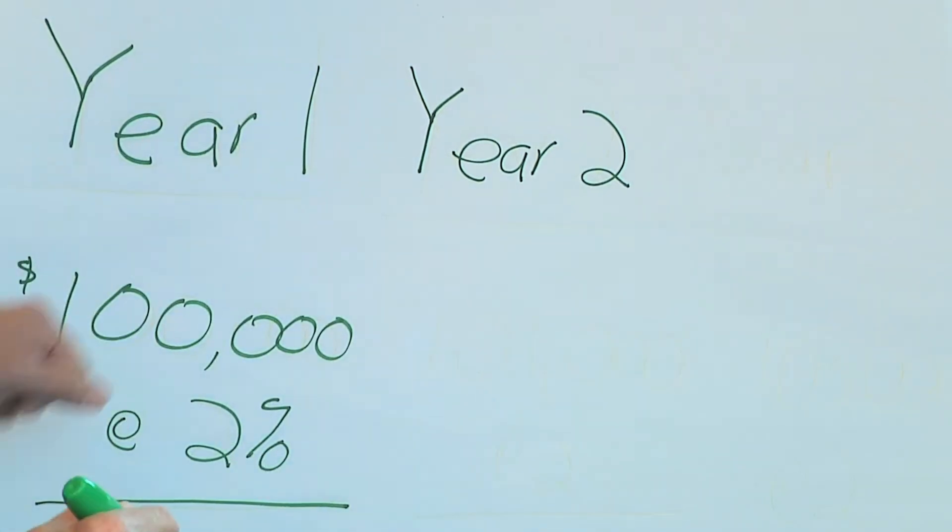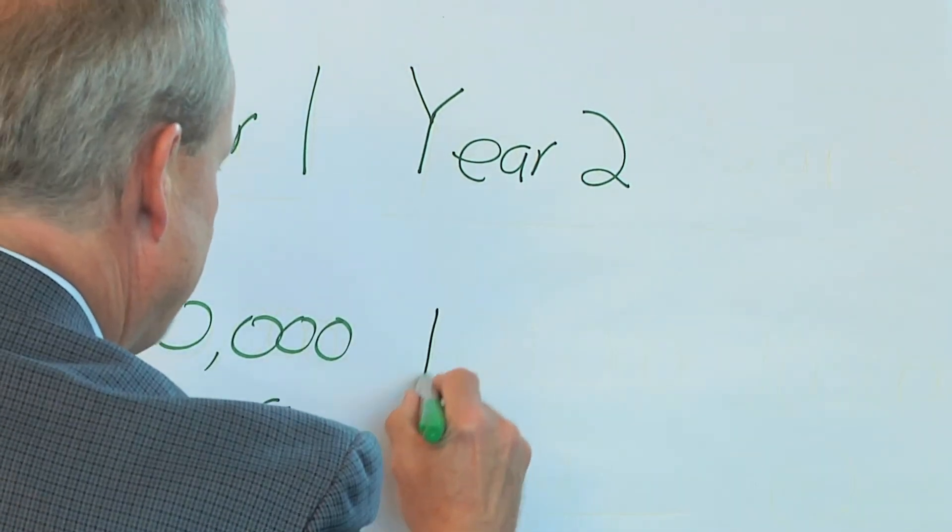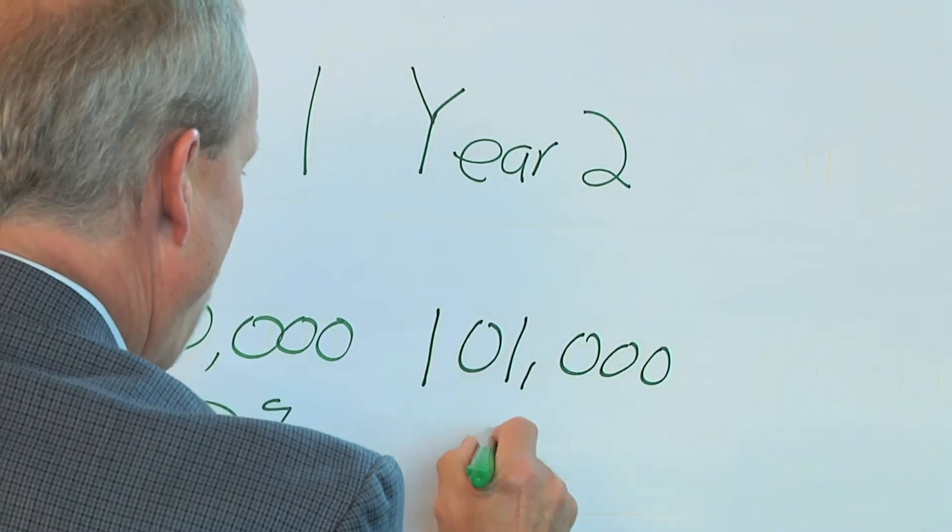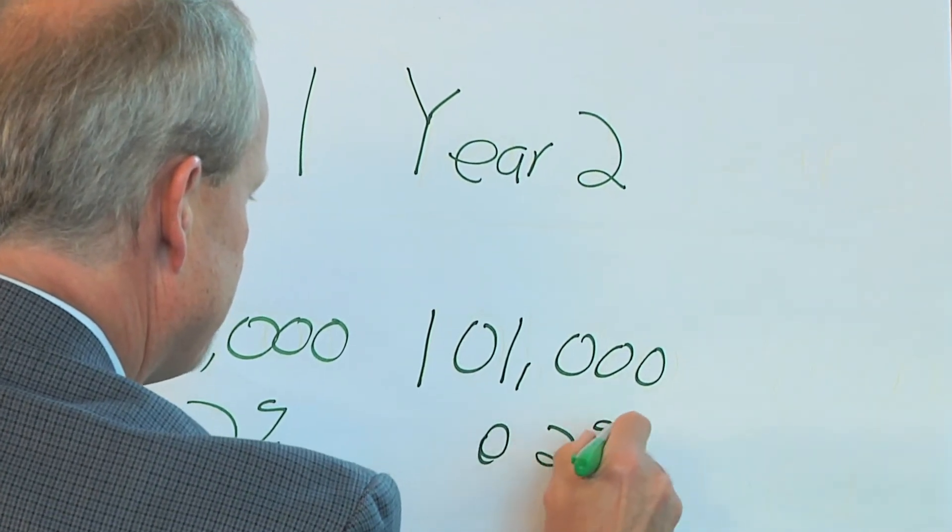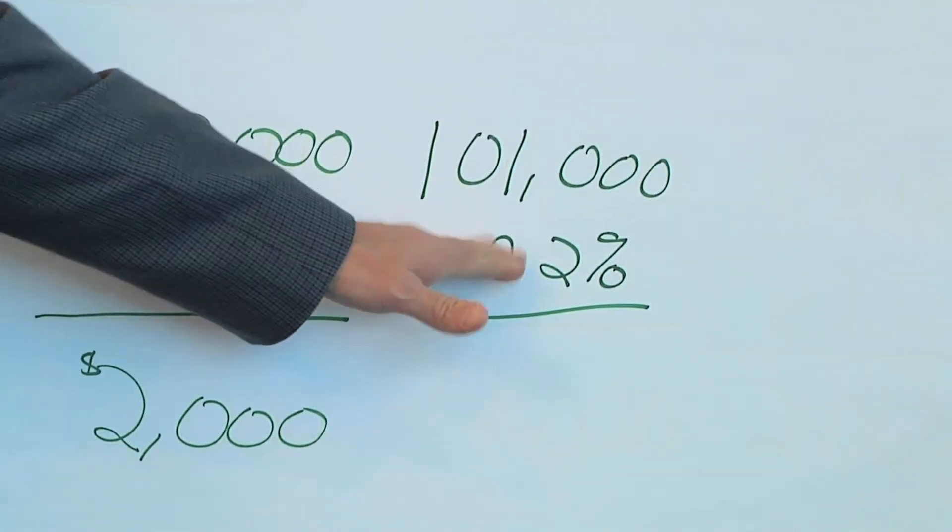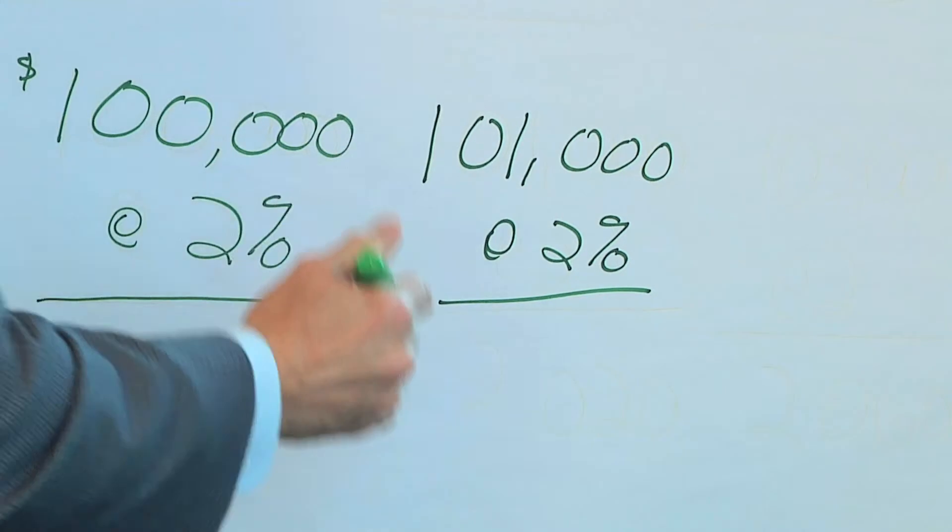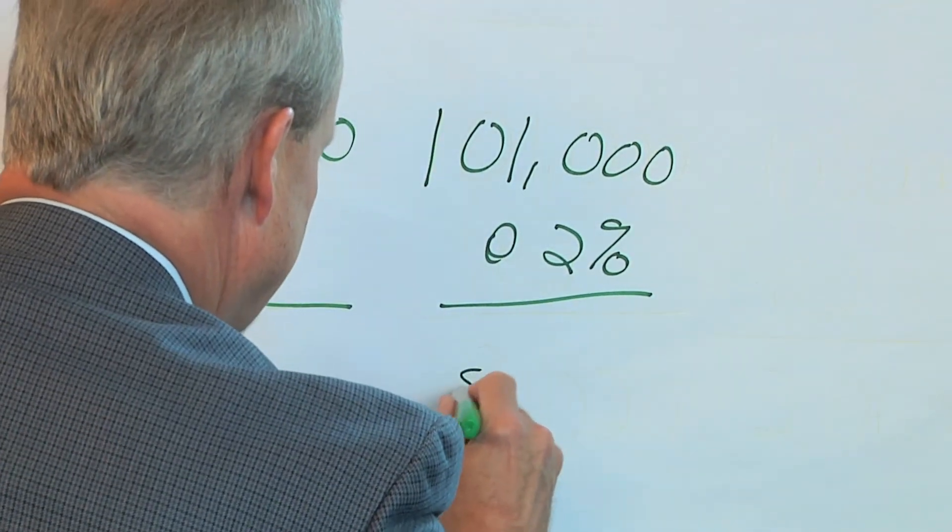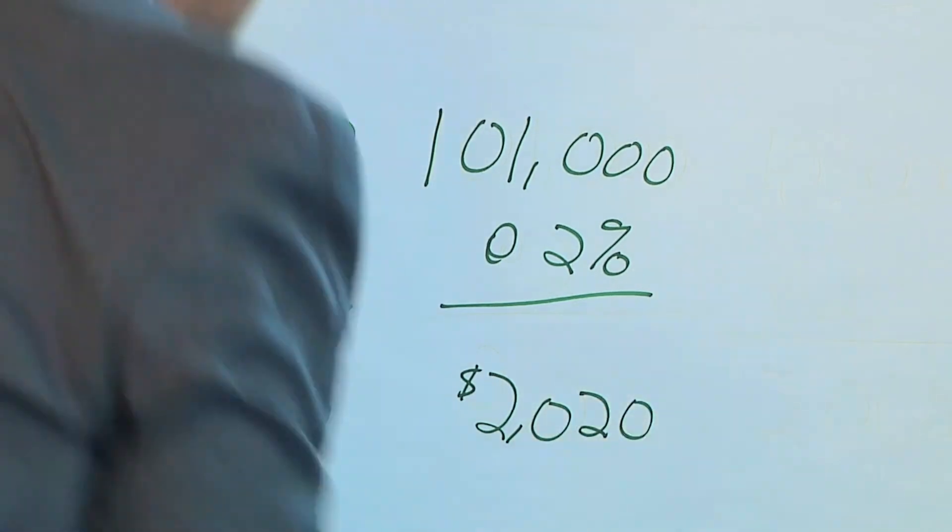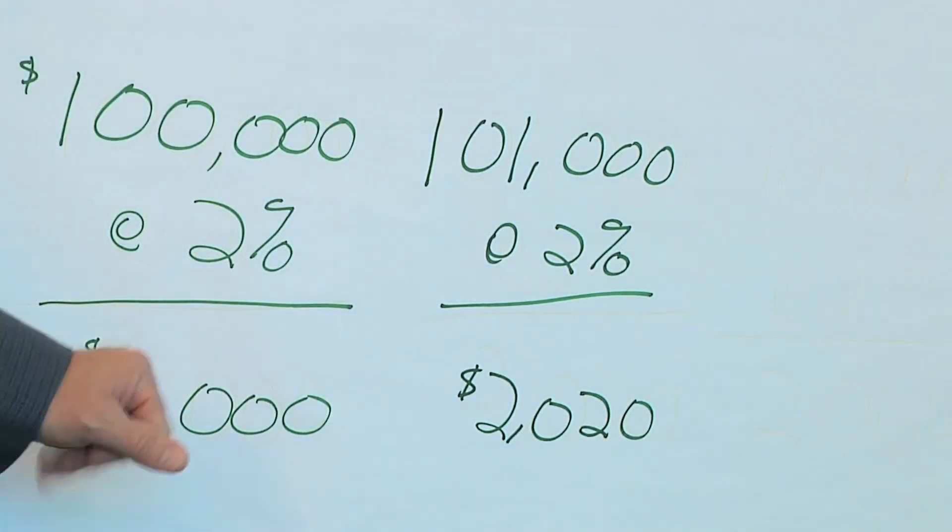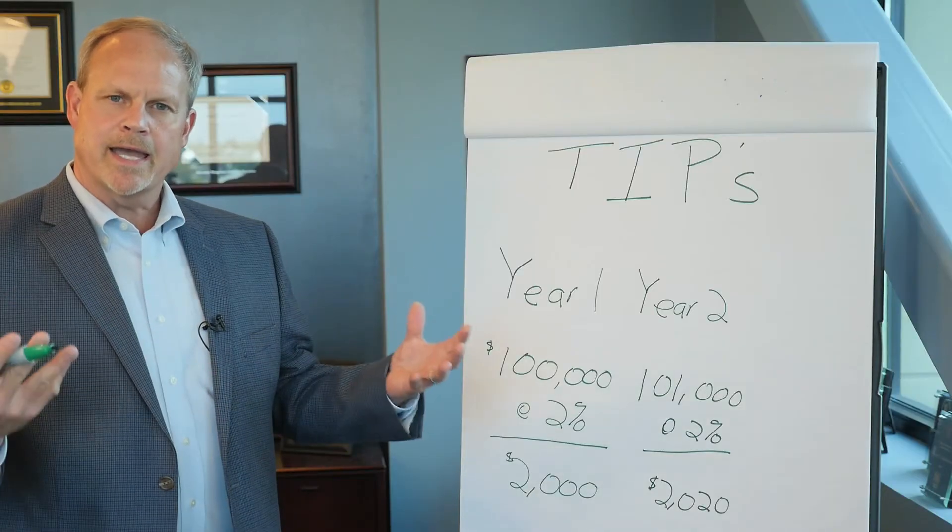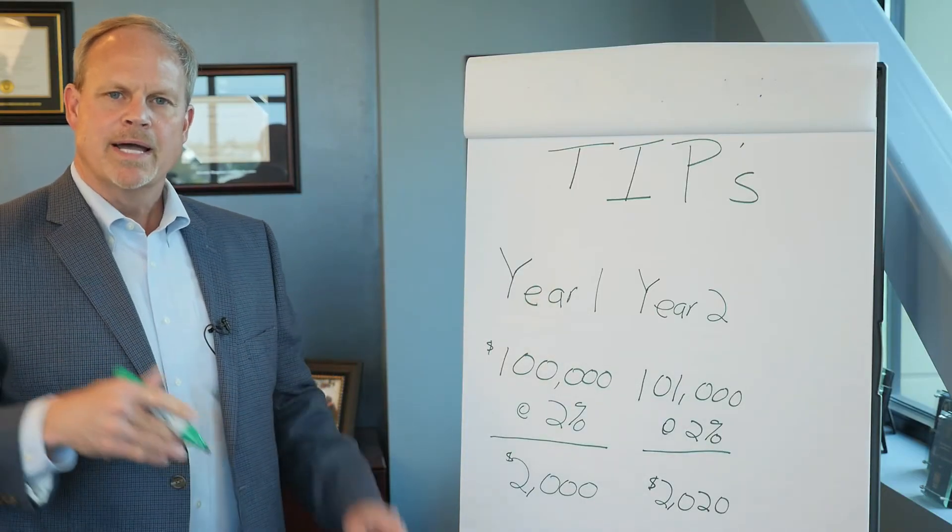In year two would mean that the face value of the bond would actually be worth one hundred and one thousand, and again the coupon remains fixed at two percent, so the actual income received would go from two thousand dollars to two thousand and twenty dollars.